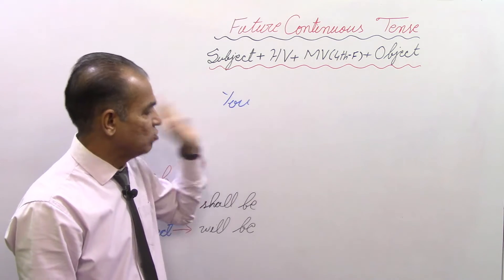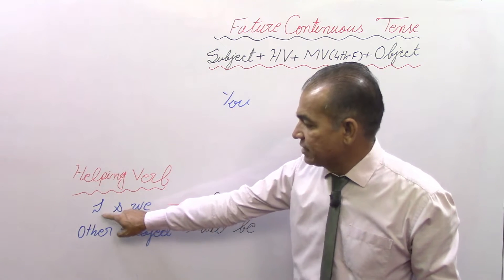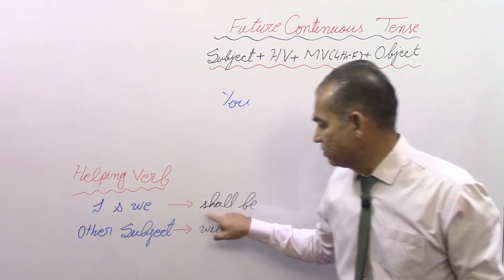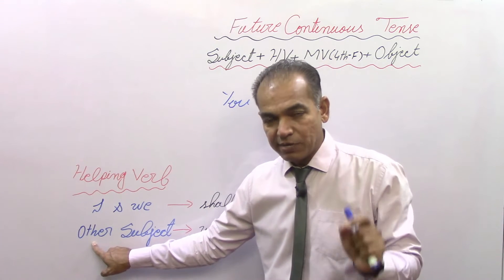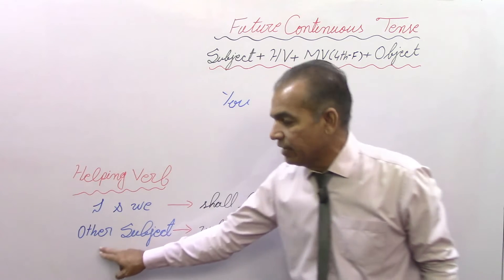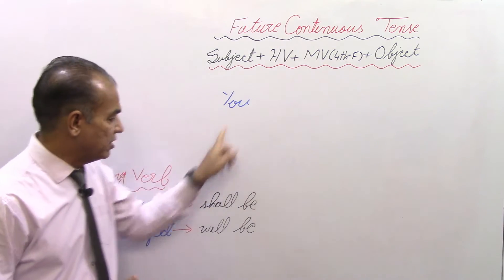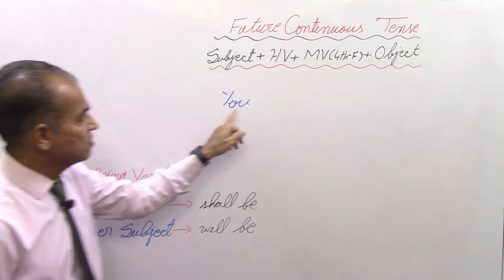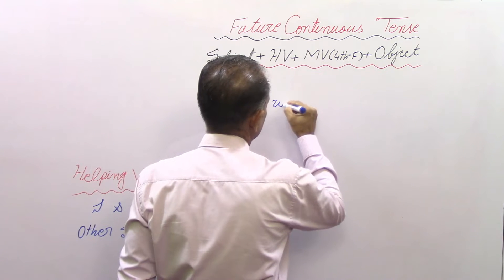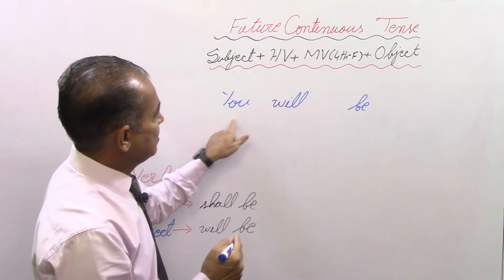Now the helping verbs. In future continuous tense, if the subject is 'I' or 'we', we use 'shall be' as helping verbs. With all other subjects — other than 'I' and 'we' — we use 'will be'. Here the subject is 'you', which is other than 'I' and 'we', so we will use 'will be' as the helping verbs.